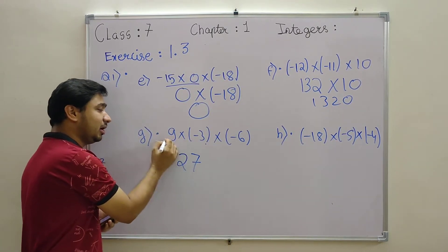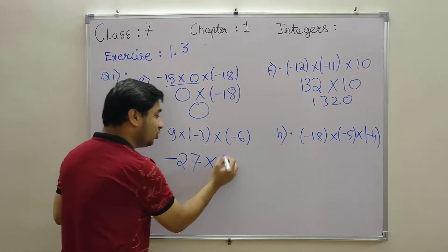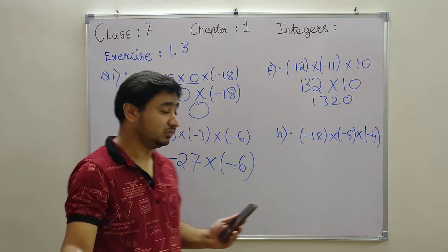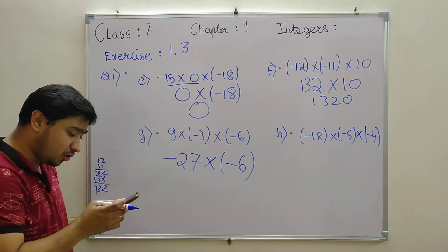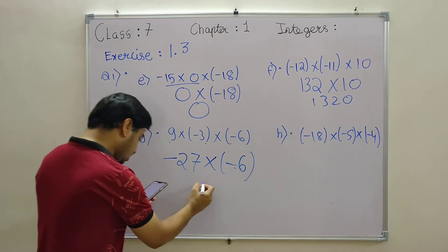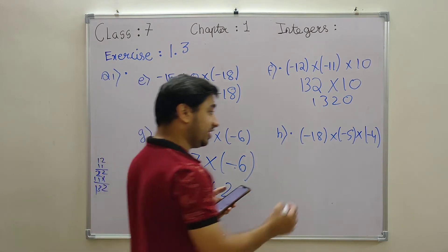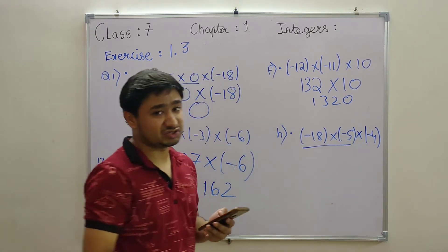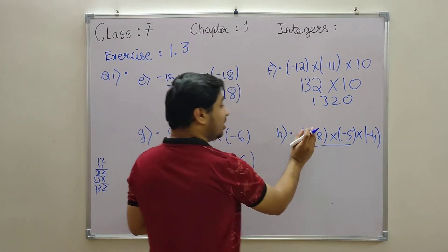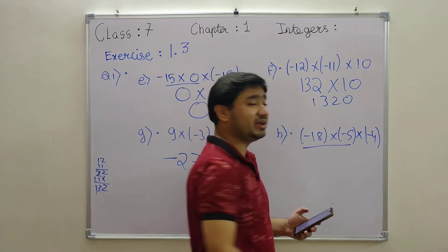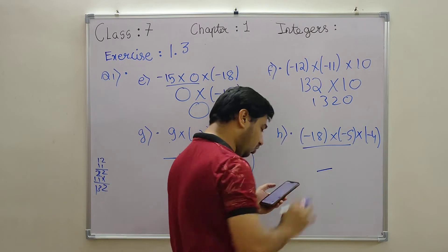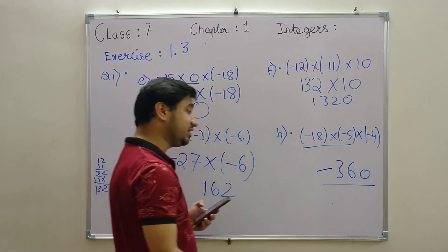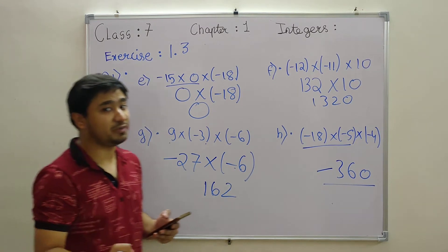9 into 3 is 27; plus into minus gives minus, into minus 6 — minus into minus gives plus. So 27 into 6 is 162, and the sign is plus. Next: 18 into 5, into minus 4. We multiply all three together: minus into minus is plus, then plus into minus is minus, giving the final sign as minus. The numbers multiply to give 360, so the answer is minus 360. Do the multiplication carefully in a rough column to avoid mistakes.